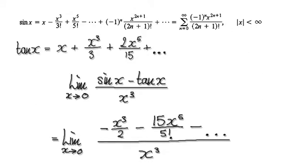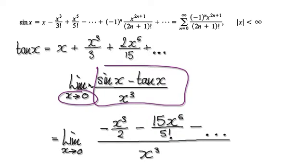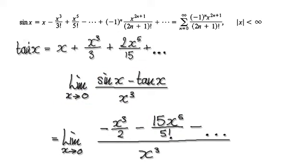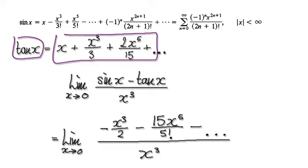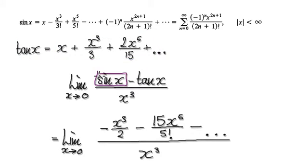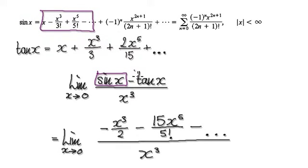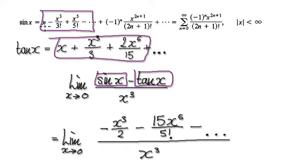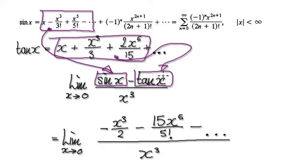Following on from the previous two videos, we were trying to find the limit of this as x approaches 0. We spent some time and came up with a series for tan of x. So now we need to get the series for sine, which is this series here. And then we now need to get sine take away tan. We've got our tan here, so we would put this series into here, and then we would put this series into here.